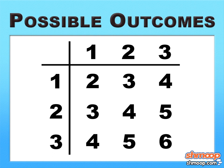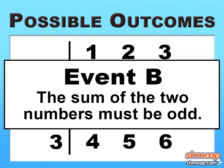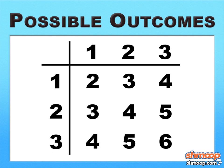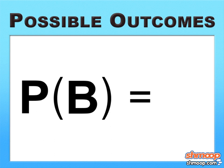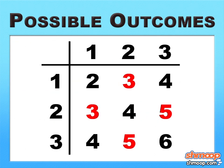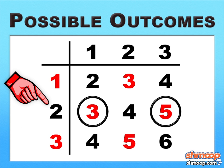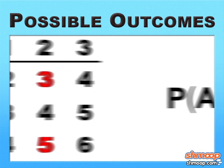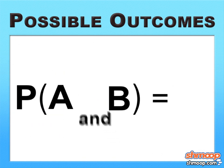Now that we've figured out event A, let's move on to event B. The sum of the two numbers you spin must be odd. It's a little more difficult to spin twice and still have an odd number. Since there are 9 total possible outcomes and 4 of them are odd, the probability of B on its own is 4 out of 9. But remember, the only results that count are the ones that occur when you spin an odd number first. Because 2 is an even number, we can't count this 3 or this 5. Therefore, the probability of A and B happening — the only outcomes that occur in both — is 2 out of 9.